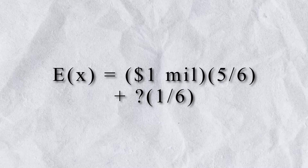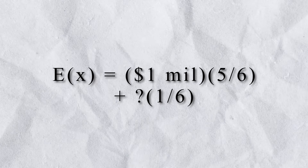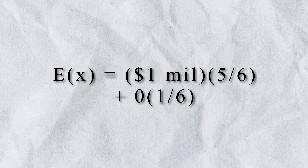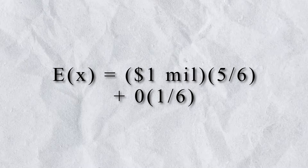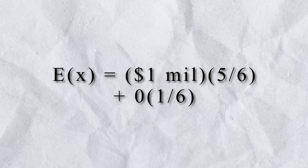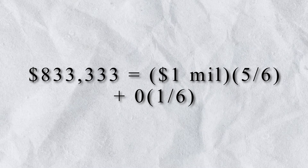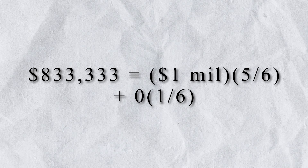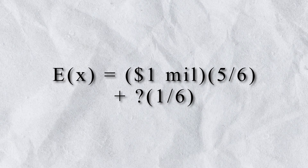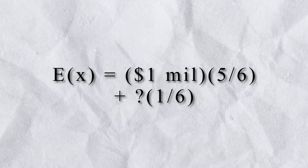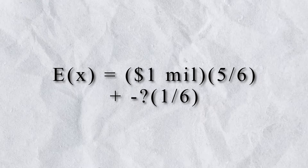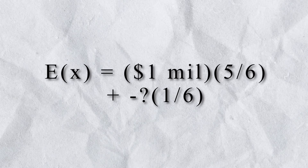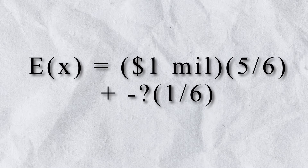So how do we represent losing in Russian Roulette? Can we just put a 0 here? No — a value of 0 would signify no gain or loss. In this scenario, the expected value would be about $833,000, which would make it a trivial decision: play the game. No, to represent losing in Russian Roulette, we need a negative value. But what should this value be? We need it to accurately measure the expected value — but how do we find it? How do you quantify the value of a human life?